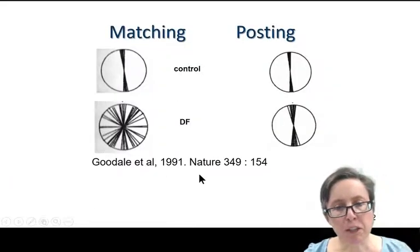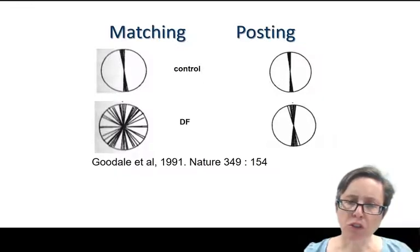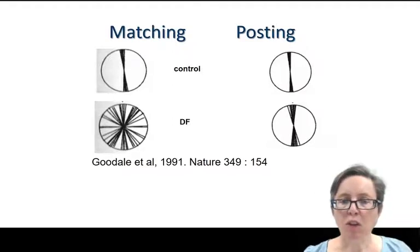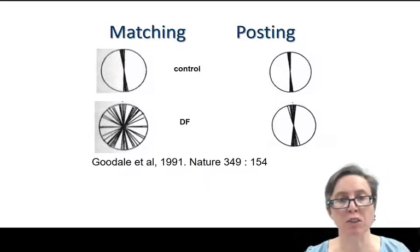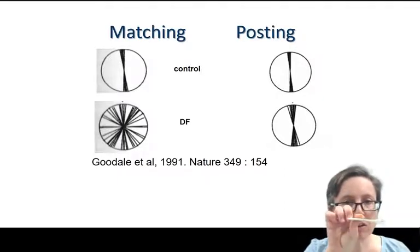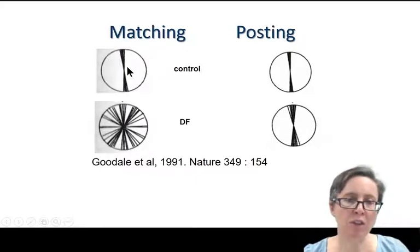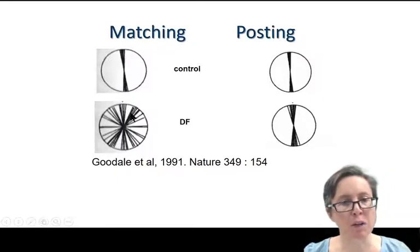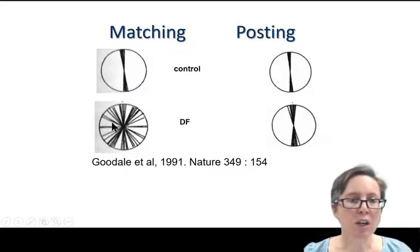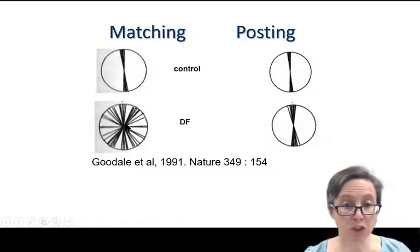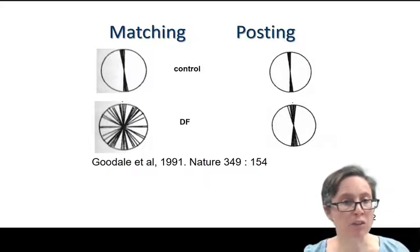A famous Nature paper showed DF performing a task with a slot like a letterbox, mounted in a board that could be rotated to horizontal, vertical, or oblique orientations. She was asked to hold a card and rotate it to match the slot's orientation. Controls matched within five or ten degrees. DF was all over the place, sometimes making 90-degree errors — if shown a vertical slot she'd hold the card horizontally — essentially at chance. She had no idea what the orientation of the slot was.